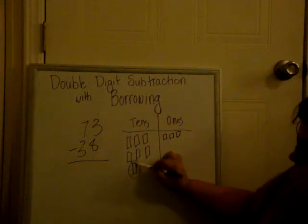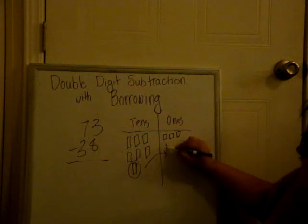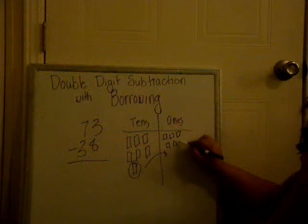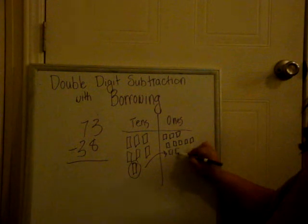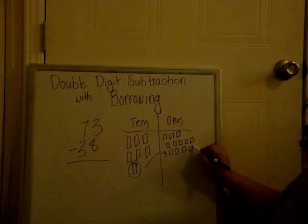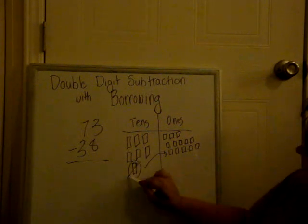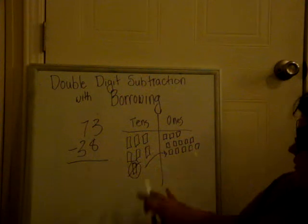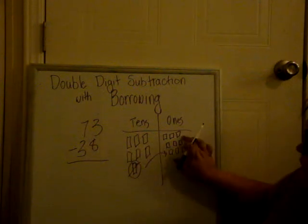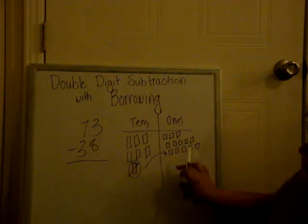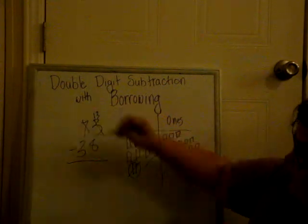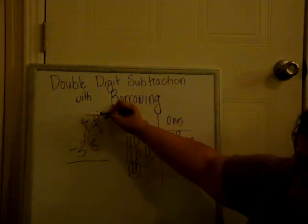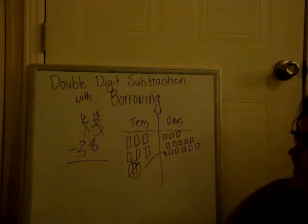So we're going to borrow. Borrow this 10 for this ones place, counting 1 through 10. So that 10 is now gone. Numbers have changed. We have to change these numbers. So we don't have 3. We have 13 now. So our 3 will change to a 13. And our 7 is no longer a 7. It has been changed to a 6. So now we have 6 and 13.